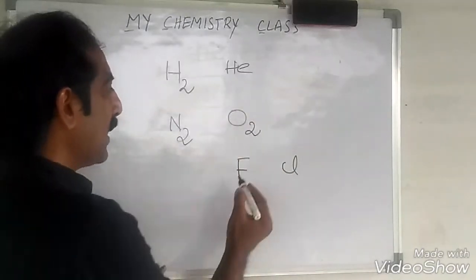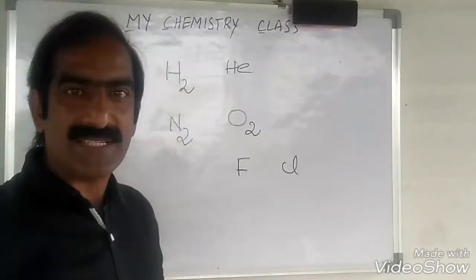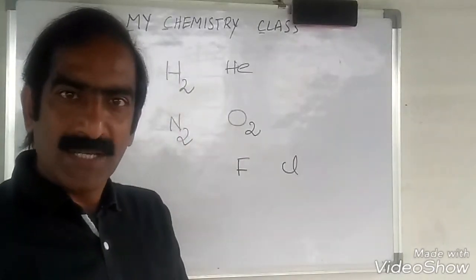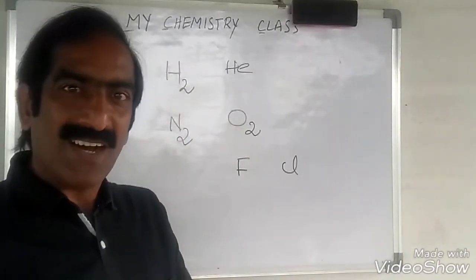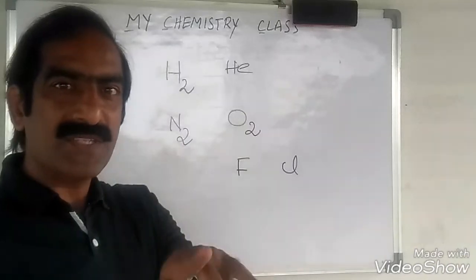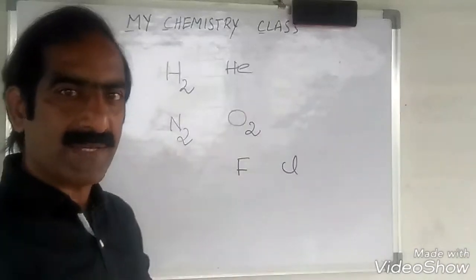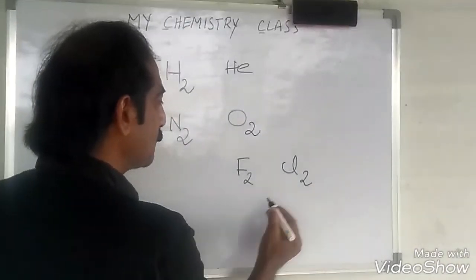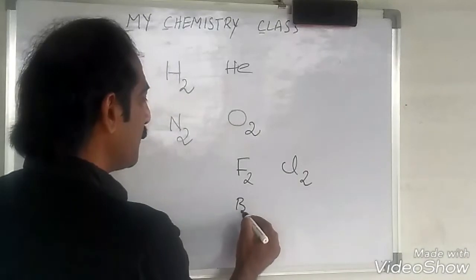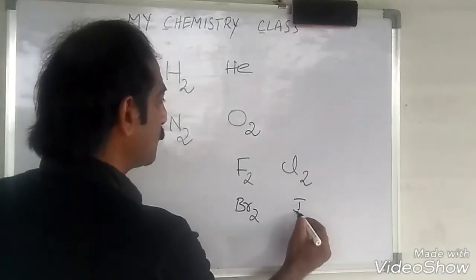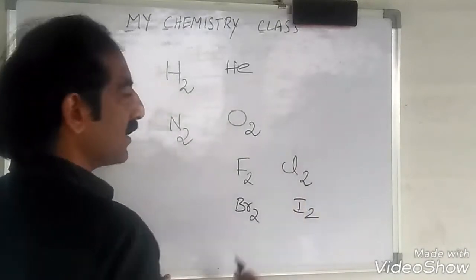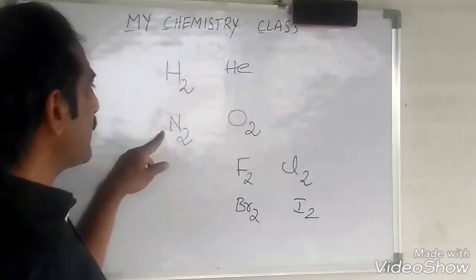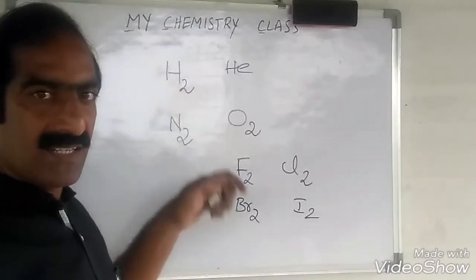O2. And halogens — what are halogens? Fluorine, Chlorine, Bromine, Iodine — all these halogens exist as dimers: F2, Cl2, Br2, I2. All these elements exist as dimers.